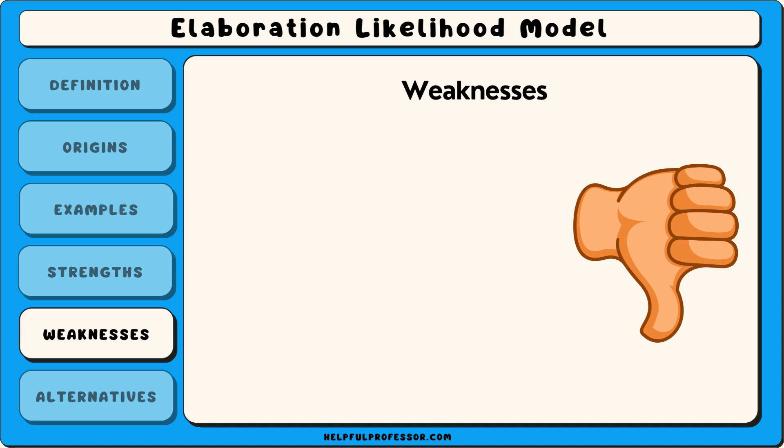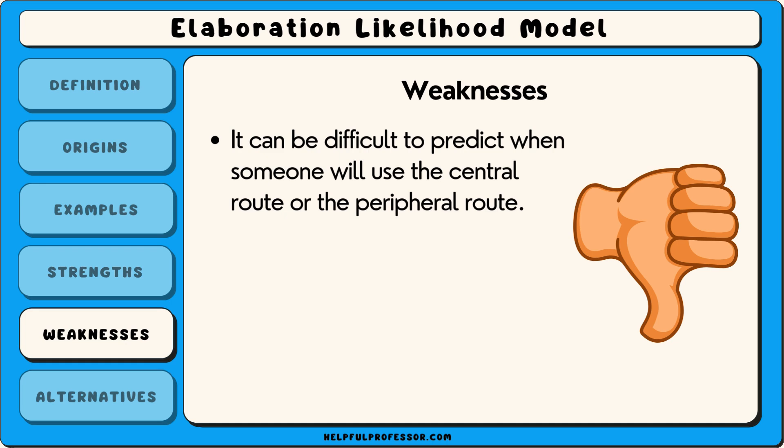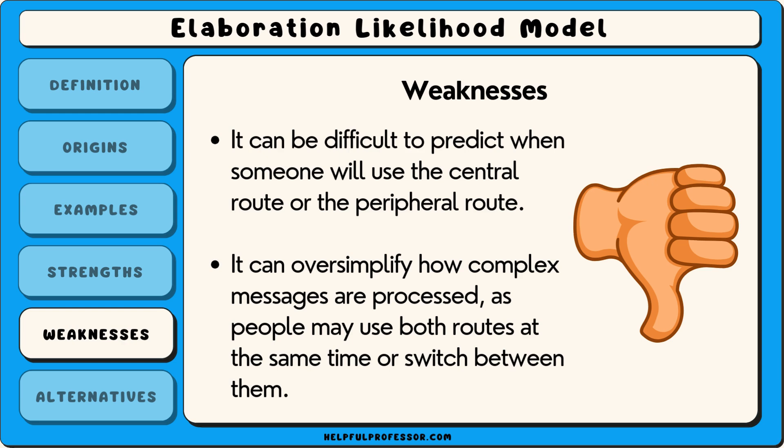One weakness of the elaboration likelihood model is that it can be difficult to predict when someone will use the central route or the peripheral route. People's motivation and ability to process information can change depending on the situation, making it challenging to know which type of persuasion will work best. Additionally, it can oversimplify how complex messages are processed, as people may use both routes at the same time or switch between them.